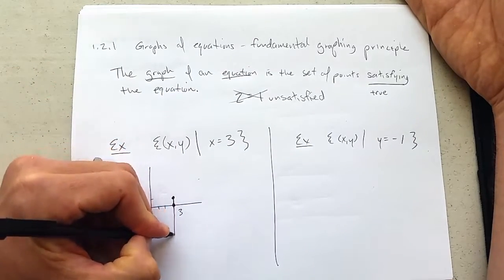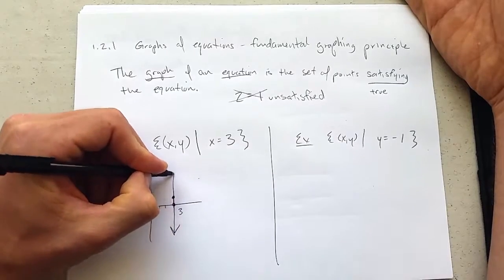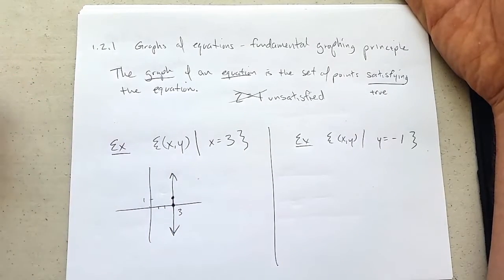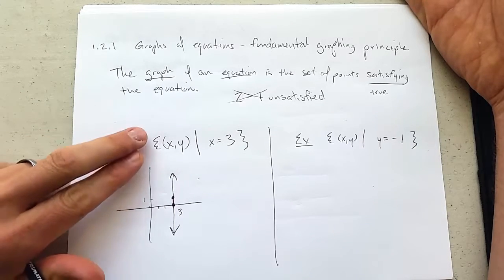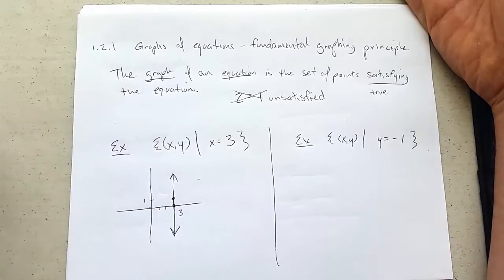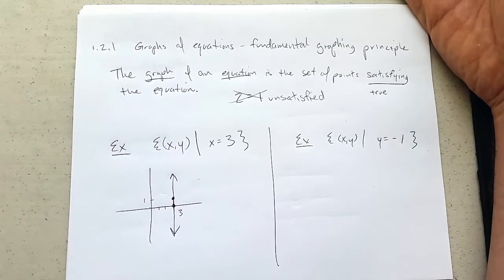Now every single point in between also has x-coordinate 3. Every point below has x-coordinate 3. Every point above also has x-coordinate 3. So this graph represents the same relation as this set notation. So these are the same relationship here.